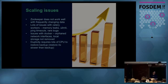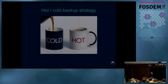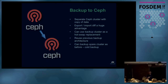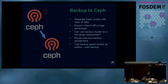These issues led us to look for something better, and we came up with a cold backup strategy. What's the fastest way to back up a Ceph cluster? Use another Ceph cluster. Ceph is fast, so Ceph-on-Ceph should be fast. We create a separate cluster dedicated to being a backup — just a copy of the original.